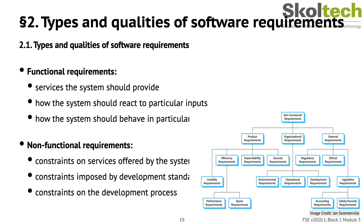Product requirements can specify constrained behavior of the software. Performance requirements specify how fast the system must execute and how much memory it requires. Organizational requirements are derived from policies and procedures in the customer's and developer's organization, such as operational process requirements. External requirements cover all requirements derived from factors external to the system, such as regulatory, ethical, or legislative requirements.